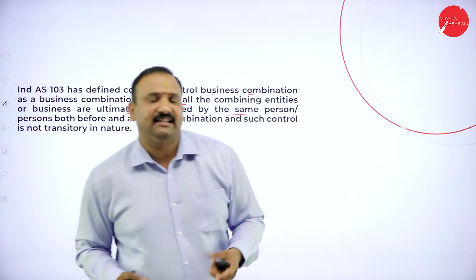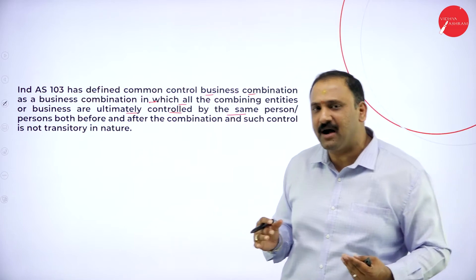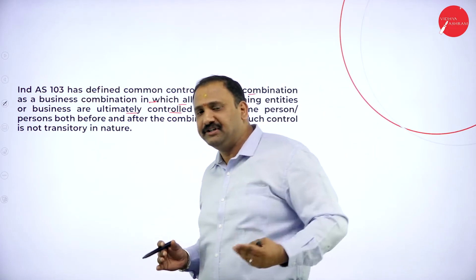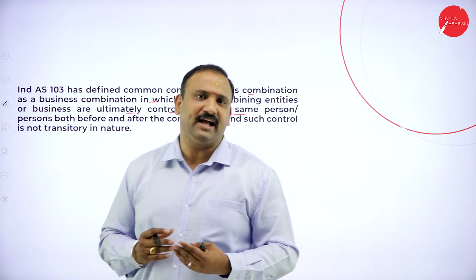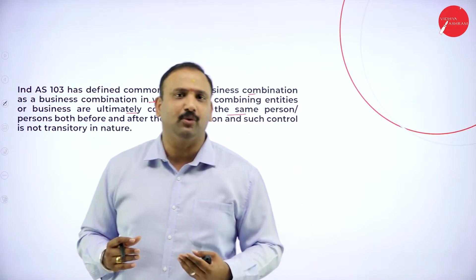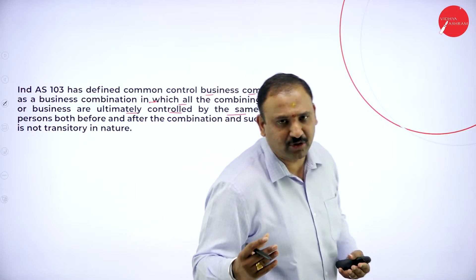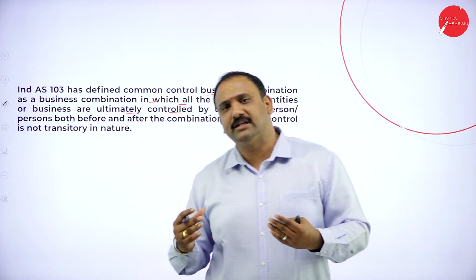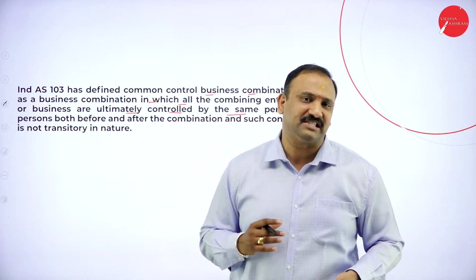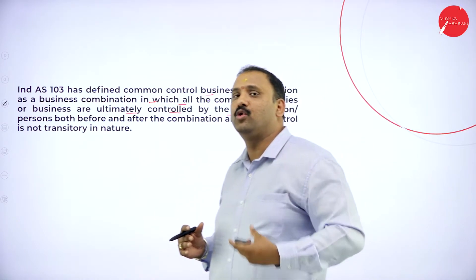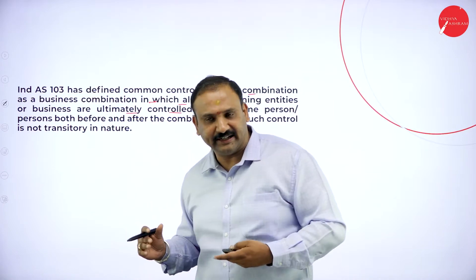For example, Reliance Industries is controlled by Mukesh Ambani. Reliance Industries is the parent company under which you see Reliance Jio, Reliance Supermarkets, Reliance Jewels, Reliance Fashion, and Reliance Capital — all coming under one person's control. That is what we refer to as common control or a common process in terms of business entities.